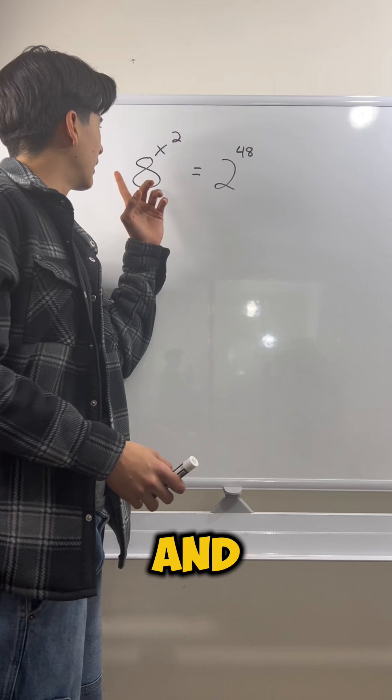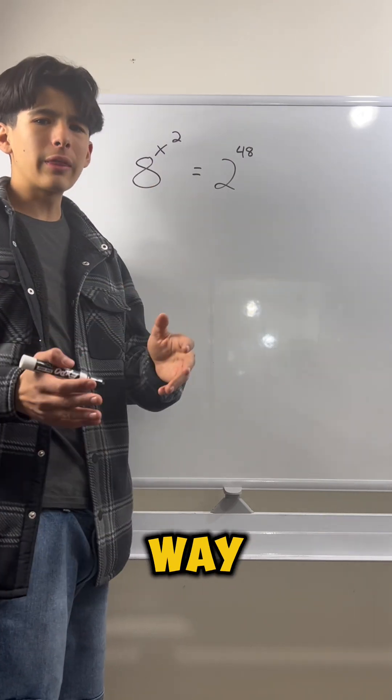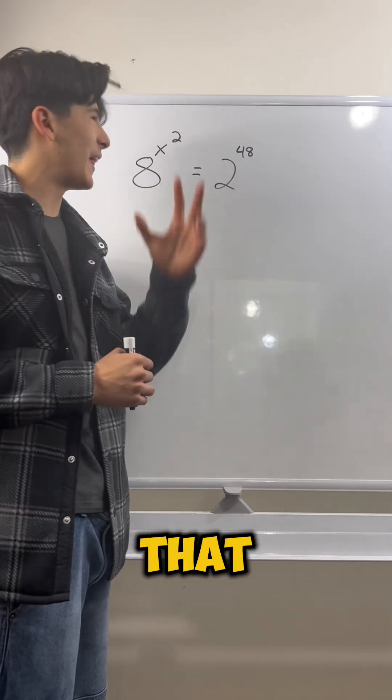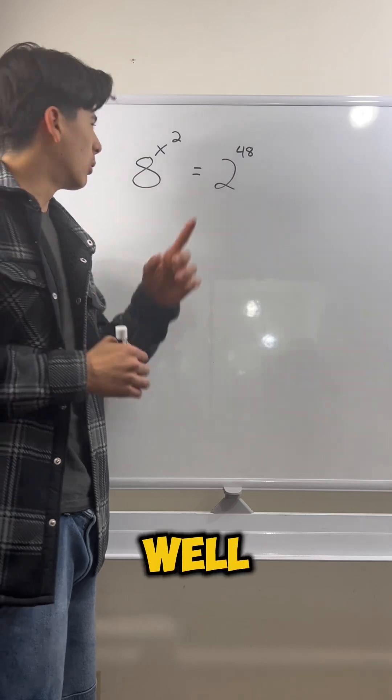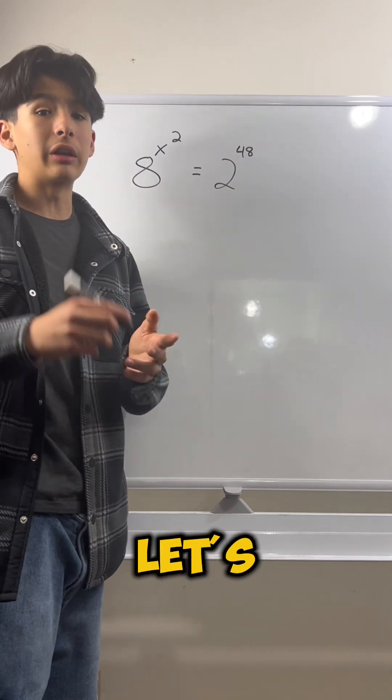So we have a power of 2 on this side and then we have 8 on this side. Is there any way that we can make both of these powers of 2 so that the exponents can be the same? Well, we know that 8 is just 2 cubed, so let's rewrite it that way.